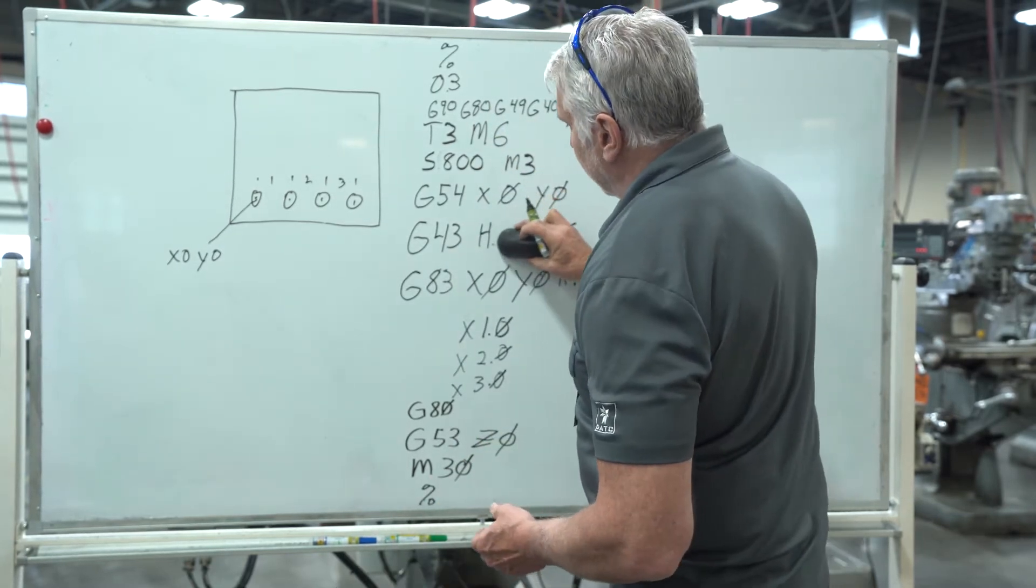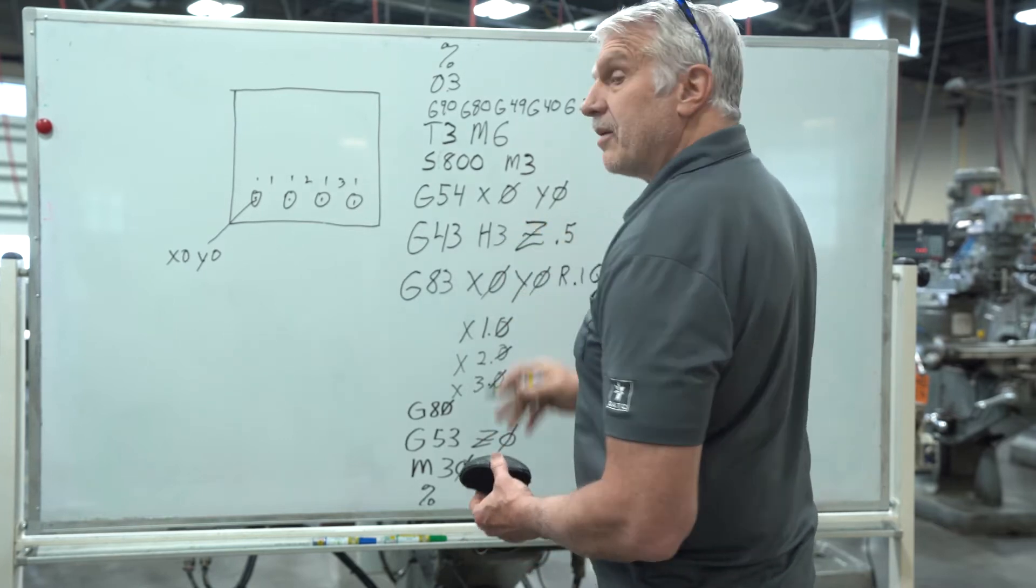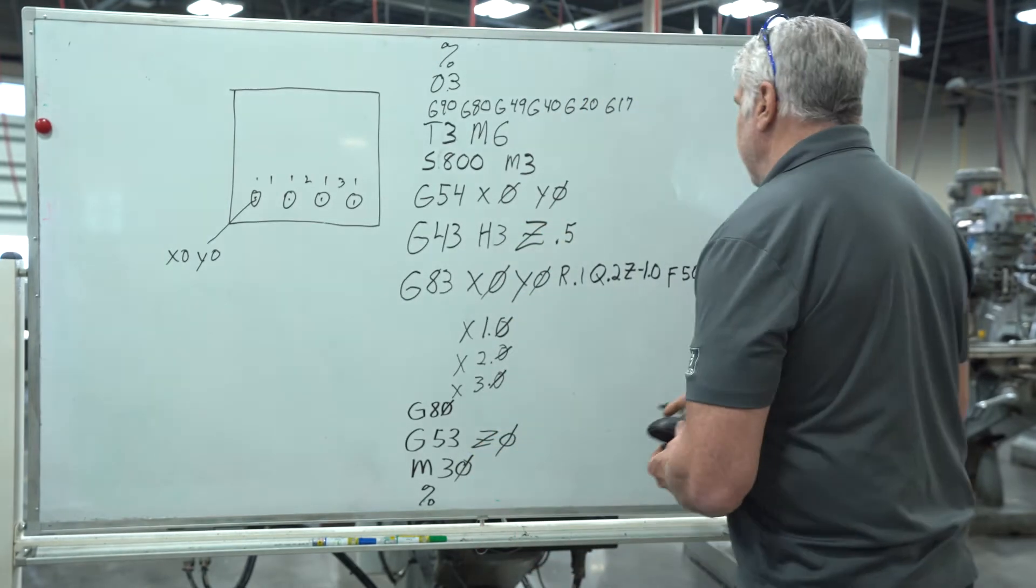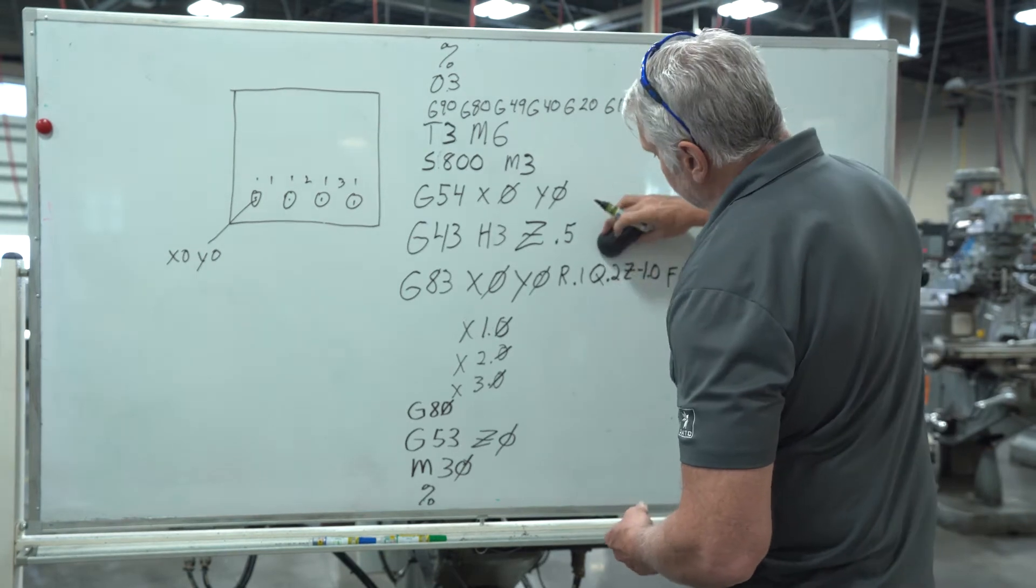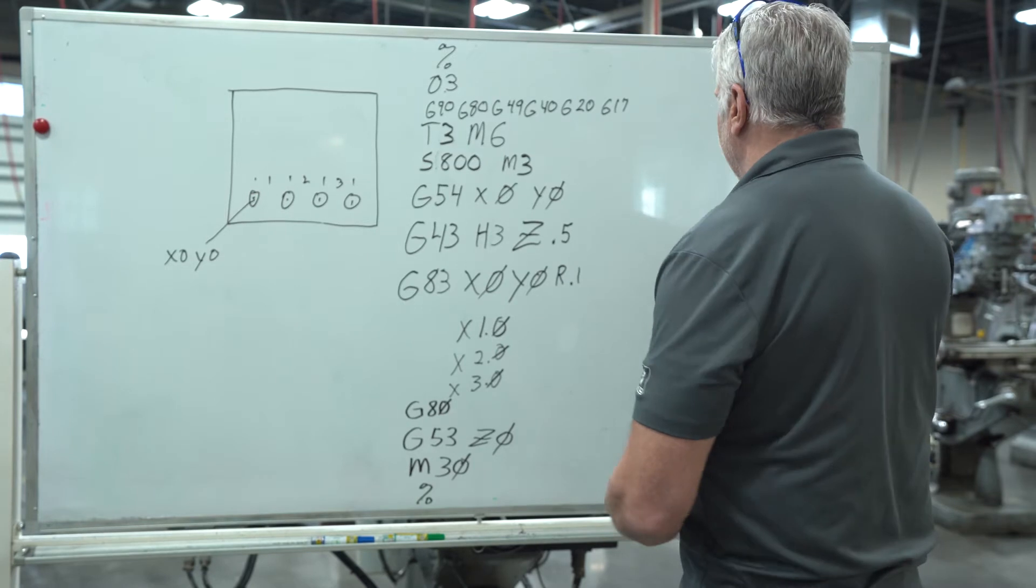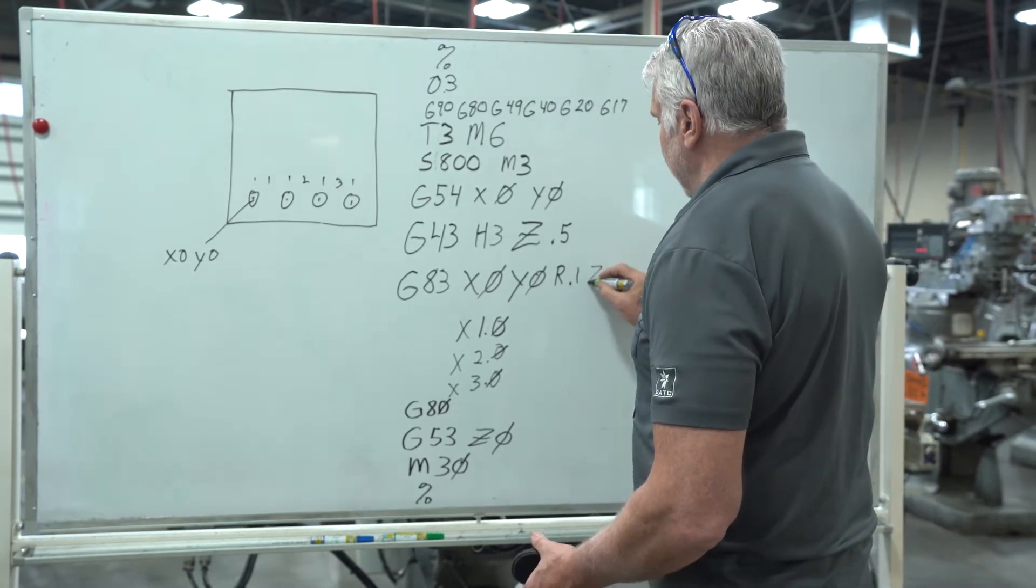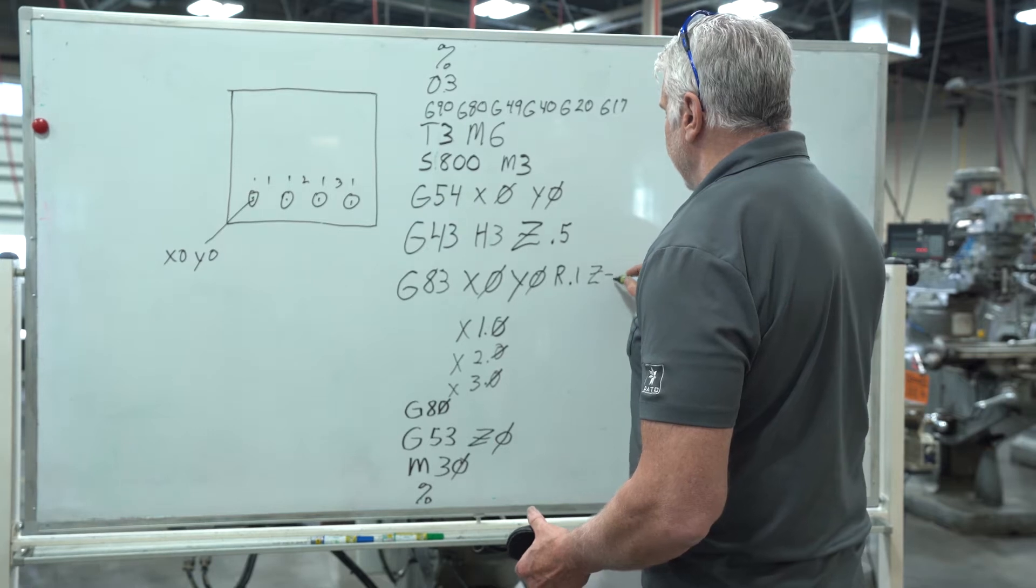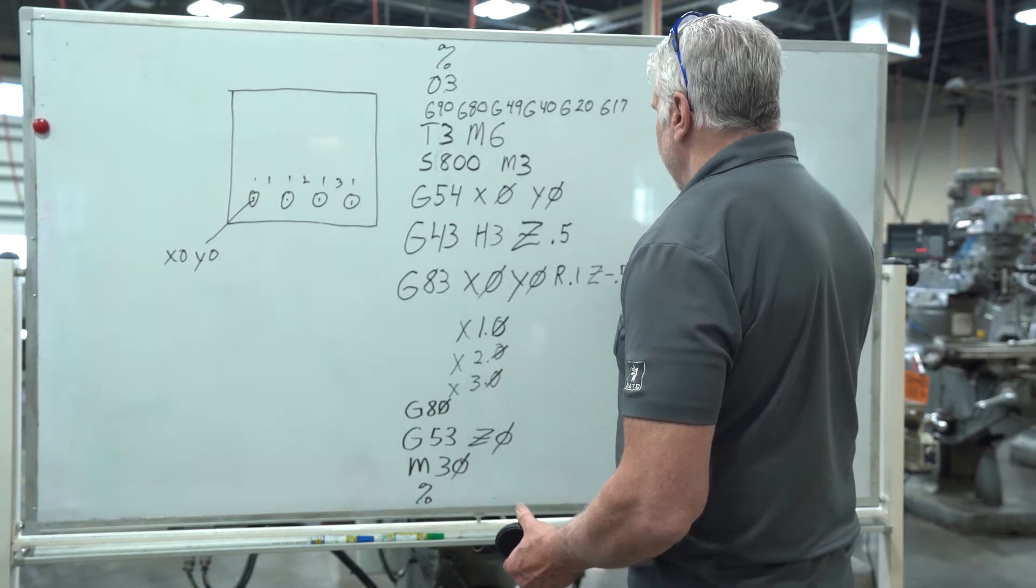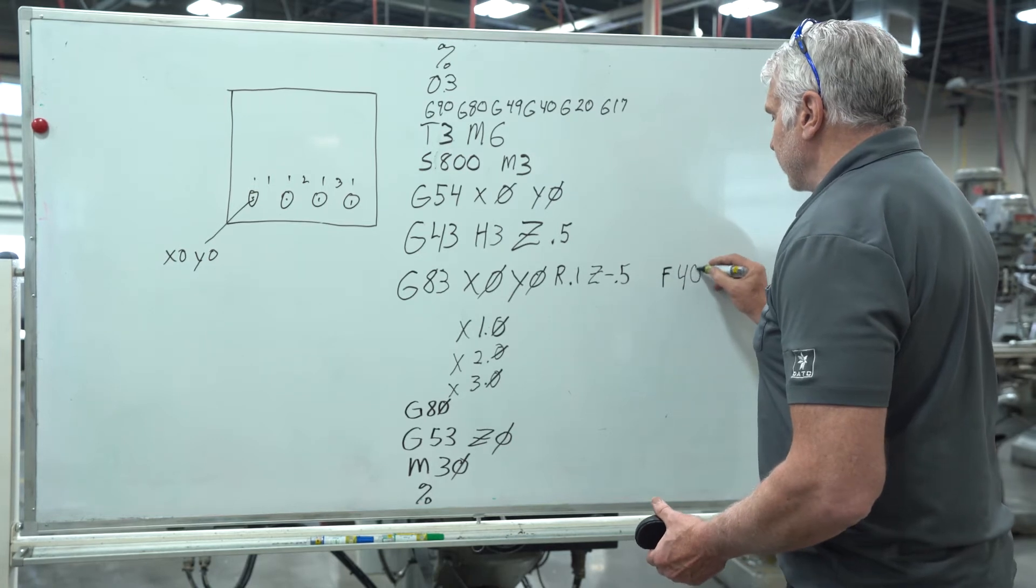Since it's tool three, we want height offset three. Let's say we're going to tap it a half inch deep, so we don't need a Q value in there. Our Z is what changes and also our feed rate. So our Z depth we're going to go to a negative half inch and our feed rate is going to be 40 inches a minute.